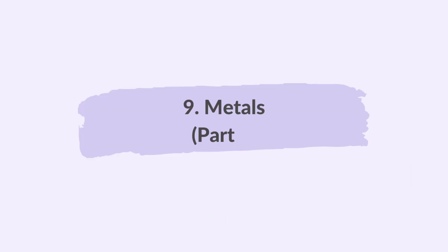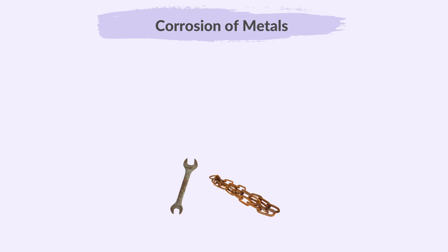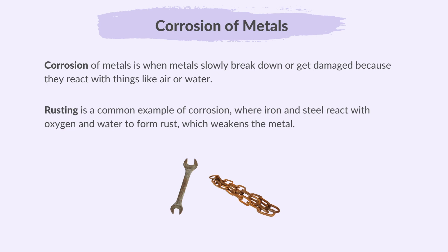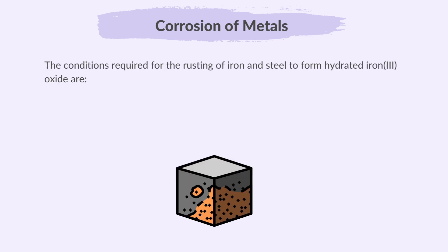In this video, you are going to learn part 3 of topic 9, metals. We'll start off with corrosion of metals. Corrosion of metals is when metals slowly break down or get damaged because they react with things like air or water. Rusting is a common example of corrosion where iron and steel react with oxygen and water to form rust, which weakens the metal.